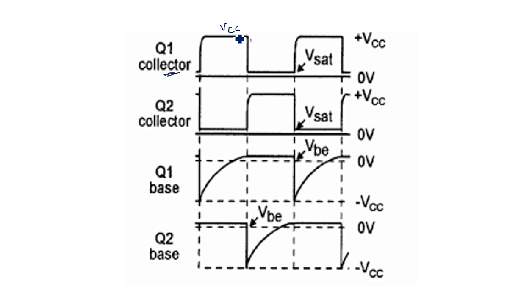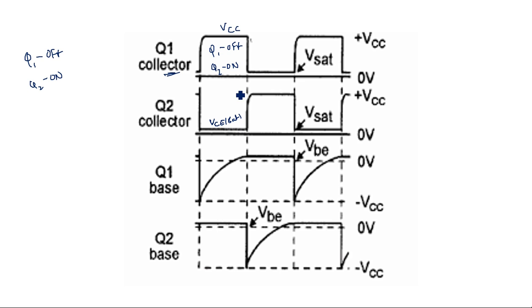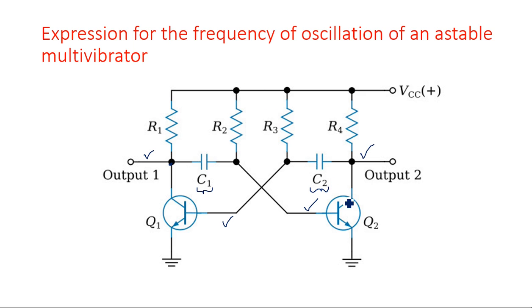We first assume the condition where Q1 is in the off state and Q2 is in the on state. Since Q1 is off, there is maximum voltage drop across it, so VC1 becomes VCC. At the same time, since Q2 is on, it gives a very small value VCE_sat. During this period, as Q2 is on, current flows through the resistance and capacitor C2 into the on transistor.